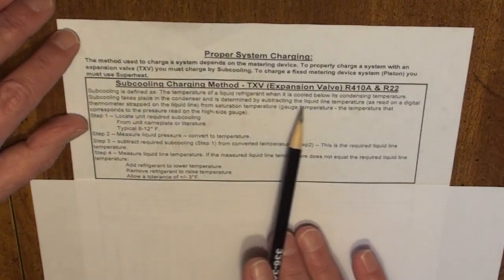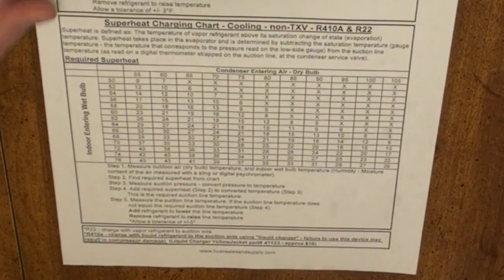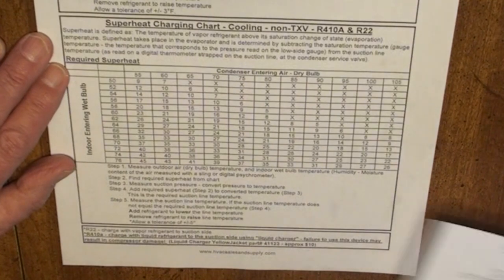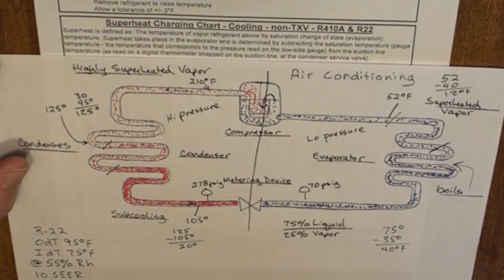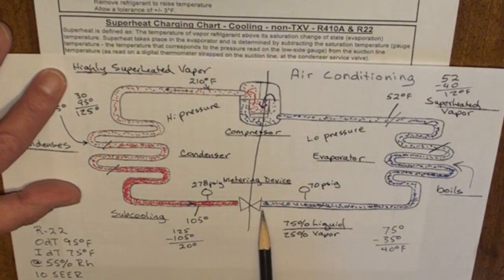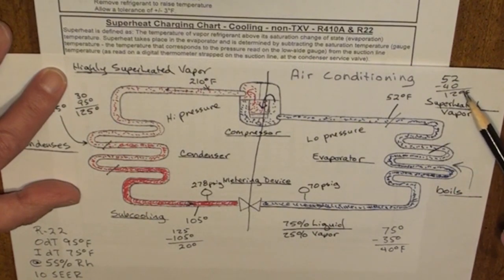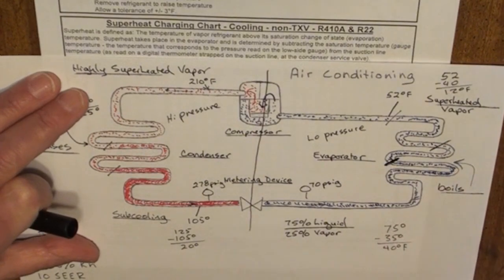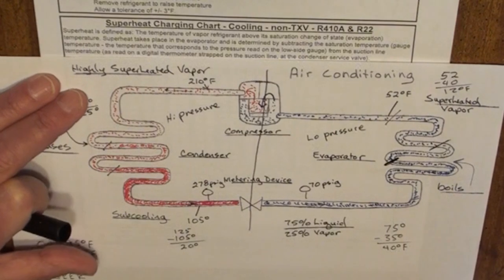Again, this subcooling method is for TXV expansion valves. The second chart is a little more complicated — this is the superheat charging chart for non-TXV 410A and R22 systems. With a fixed orifice system, high-side pressures dictate how much refrigerant is fed to the evaporator. If we have a high superheat, that means the refrigerant boiled to a pure vapor much earlier in the system than expected, so it takes on sensible heat through a larger section of the evaporator.